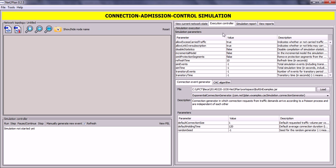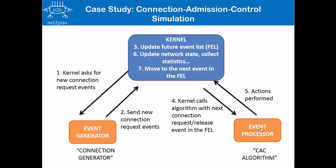Before proceeding, I will explain how the simulation works internally. Once the simulation has started, the kernel will ask for new connection request events from the event generator, also called the connection generator. Once those events are generated, they will be sent back to the kernel and the future event list (FEL) will be updated. Next, the kernel will call the event processor — the CSE algorithm — with the new event on the future event list. Based on this event, which may be a request or release of a connection, the CSE algorithm will perform some actions, and those actions will be returned to the kernel to be processed. Once processed, the kernel will update the network state, collect some statistics, and then move to the next event of the future event list, calling the CSE algorithm again, and the cycle will repeat.